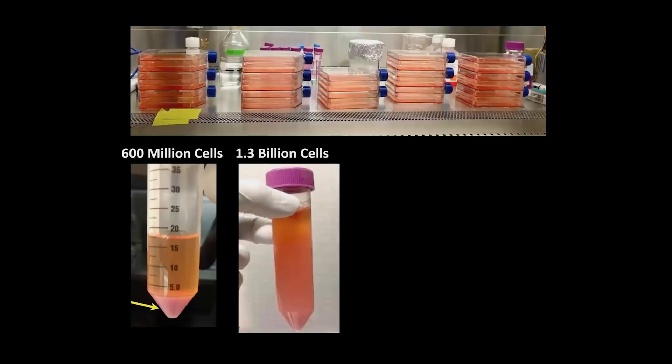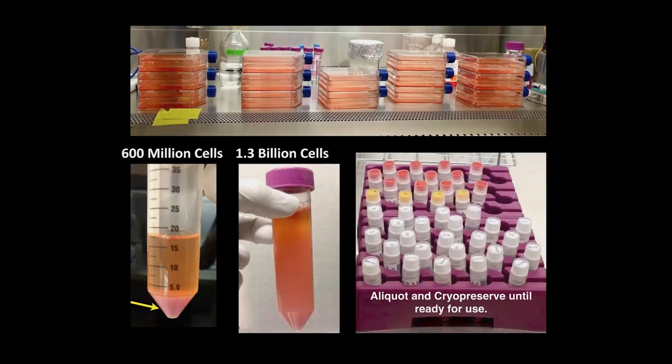We can grow billions of cells — a billion cells fit in a single 50 ml conical. But when we're talking about adherent cells and many of the parenchymal cells we're interested in, we can't keep these alive for very long. As soon as we trypsinize them, we're starting a clock to cell death. Instead, we have to aliquot the cells down, freeze them, and try to use them when we can.